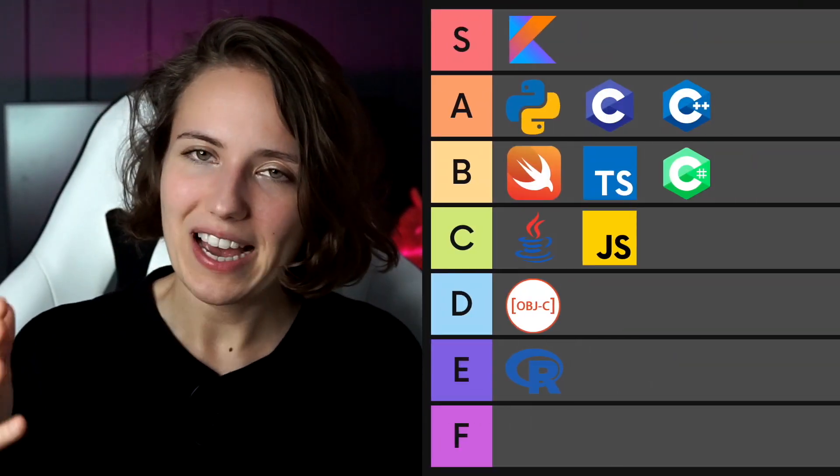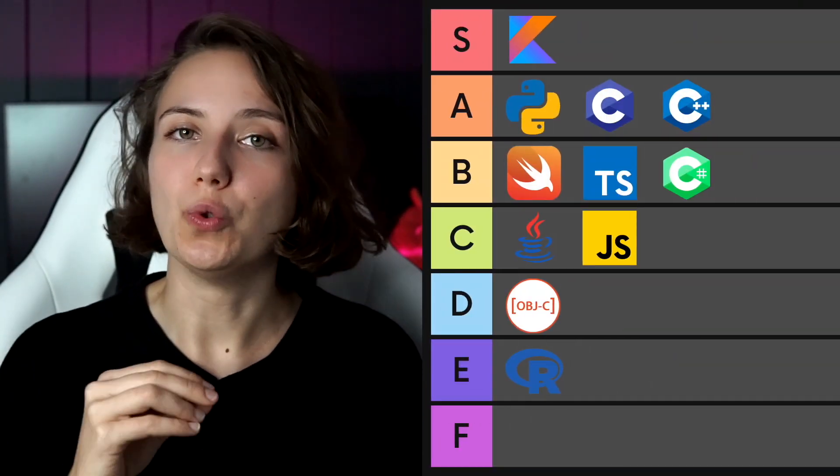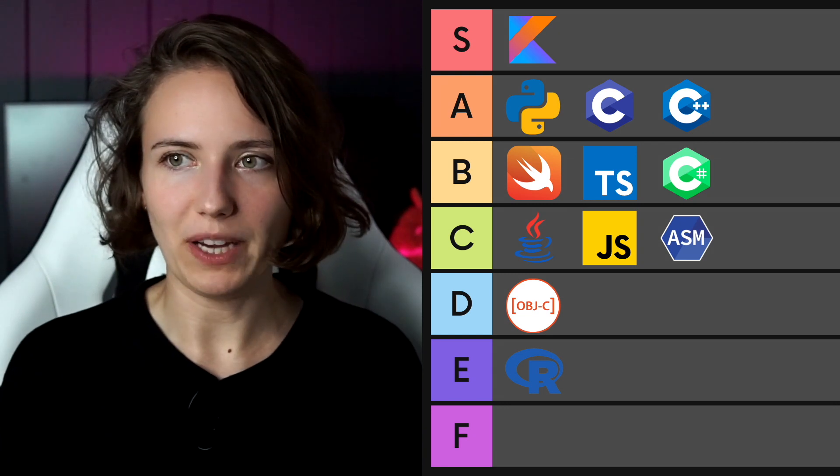Our next pair is Assembly and Bash. I put them together because it's a pain to write in them and I don't think anyone should be forced to do that. However, with Assembly, learning it gives you a little bit of an advantage — you might better understand how all other languages work under the hood, which can give you more knowledge about how to optimize things and make you a better programmer. You can also write your own compiler if you want, and that's why Assembly goes to C. I don't really want to talk about Bash, so let's just put it in E.